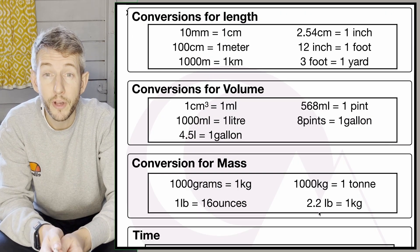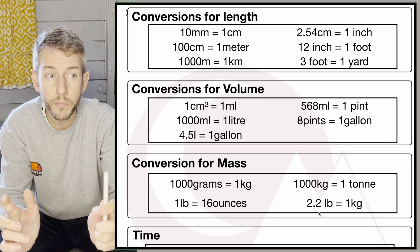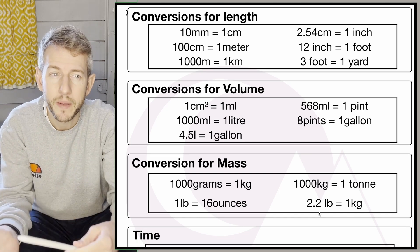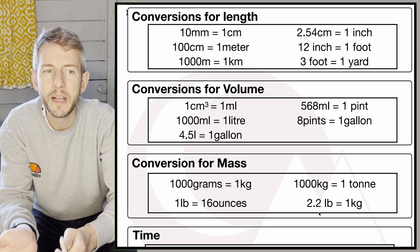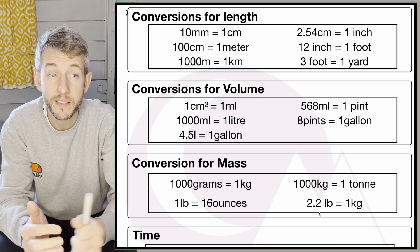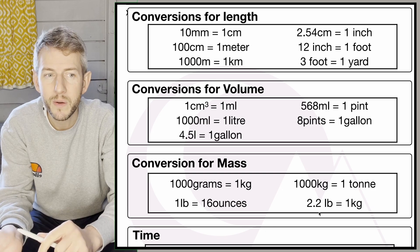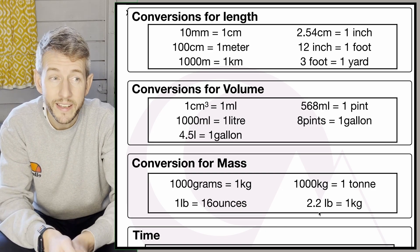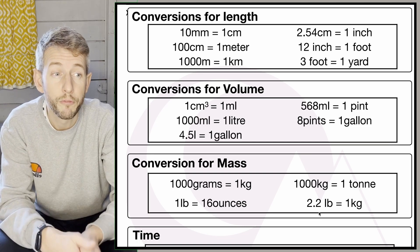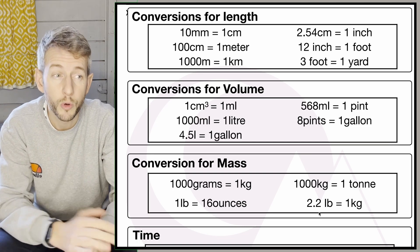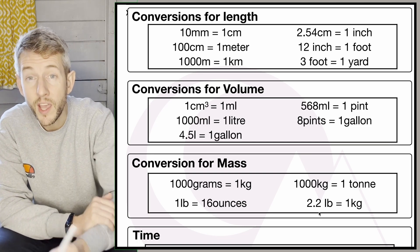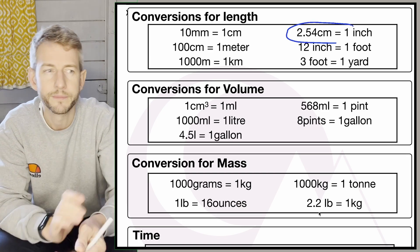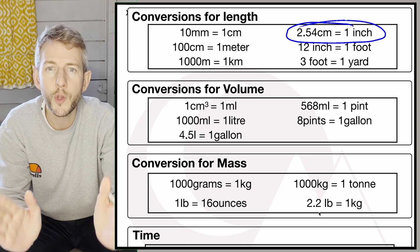Here are some conversions for length. Often in your exam some will be given, but it's useful to know them anyway: 10 millimetres is one centimetre, 100 centimetres is one metre, 1,000 metres is one kilometre, 2.54 centimetres is one inch, 12 inches is one foot, and three feet is one yard. The only one I've ever seen given in an exam is 2.54 centimetres — the others you're expected to know.